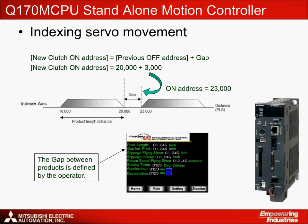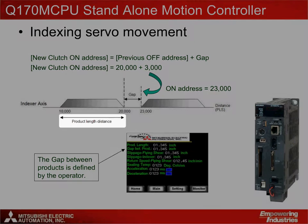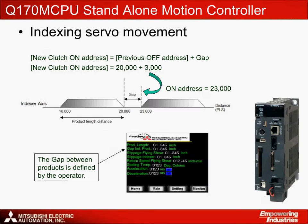The indexer axis moves a distance equal to the length of each product, assuming all products are the same length. This essentially prevents the products from getting stuck between the conveyors. The operator must define the gap between the products. Typically, this gap distance will need to be larger than a minimum set value that depends on the operation of the flying shear axis. These range limitations can easily be set on the HMI so that the operator cannot accidentally input a value that is too small, causing damage to the machine.